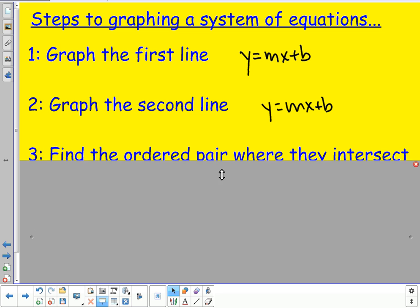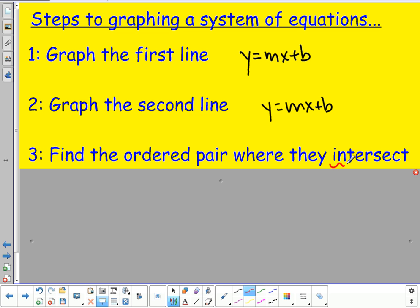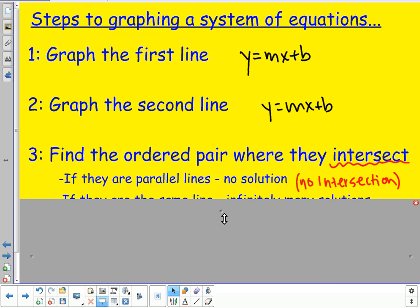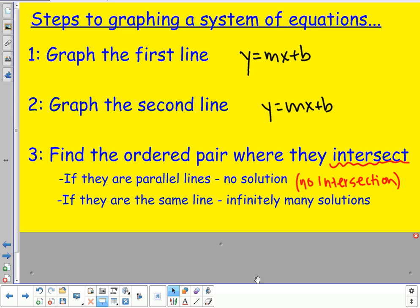Then, what happens after we graph them is we look for that solution. So we want to find the ordered pair where they intersect. We want to find that point of intersection. Find where they intersect. But keep in mind, they might not always intersect. If they're parallel lines, then they won't intersect, and there'll be no solution. So this is no intersection. If they are the same line, then there's infinitely many solutions. So the two lines lie right on top of each other.